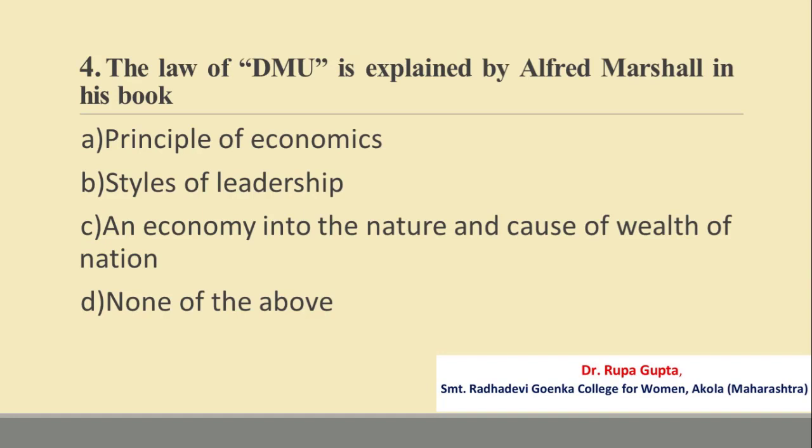Question number 4. The law of DMU, that is diminishing marginal utility, is explained by Alfred Marshall in his book. Options are: A. Principles of Economics, B. Styles of Leadership, C. An Inquiry into the Nature and Cause of Wealth of Nations, D. None of the above.